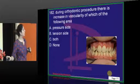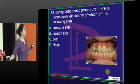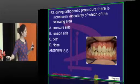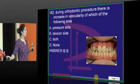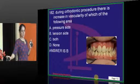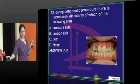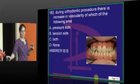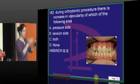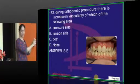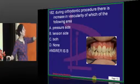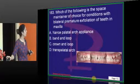During orthodontic procedure, there is an increase in vascularity in the tension side. The tooth moves towards the pressure side, so on the pressure side there will be less vascularity, and on the tension side there will be increased vascularity.